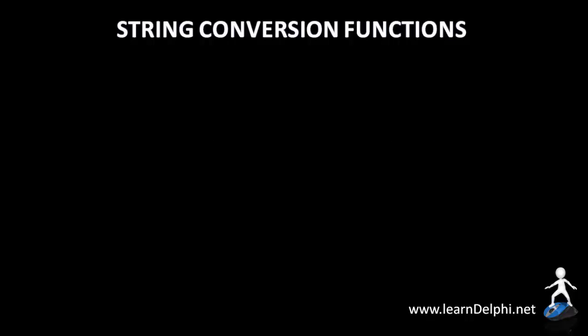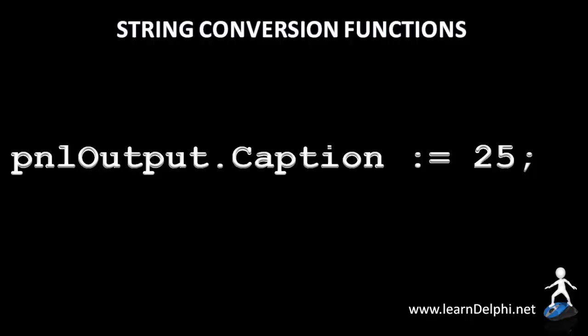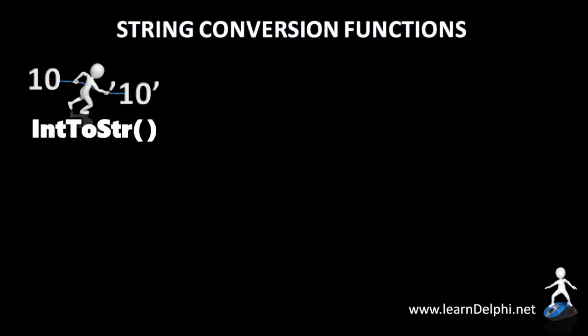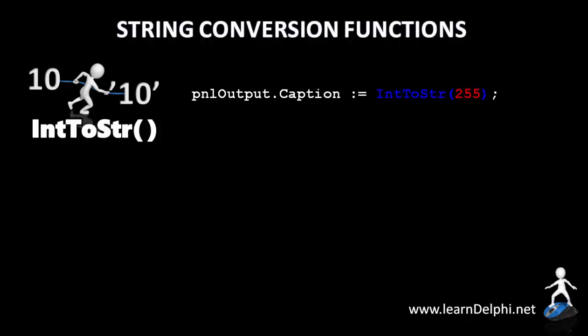Another set of string functions are those we use to convert another data type to a string value. For example, in most programming languages you cannot display a number or a date as text or captions before first converting the value to a string. Remember, string values are enclosed in inverted commas in code, but numbers are not. One of these conversion functions we use often is the IntToString function. IntToString takes a whole number — also called an integer — and makes it a string value. This statement takes the number 255 and passes it to the input parameter of the IntToString function, which converts the number and assigns it to a string property like the caption of a panel.